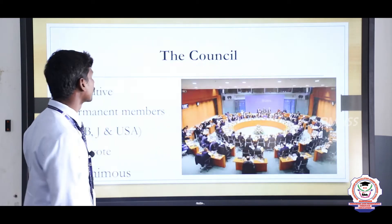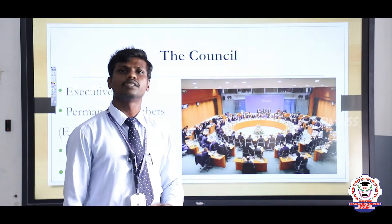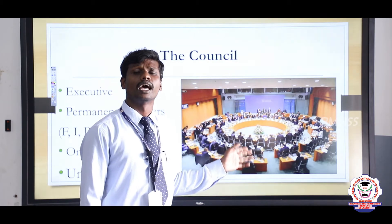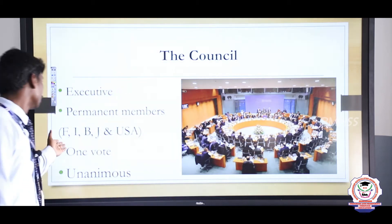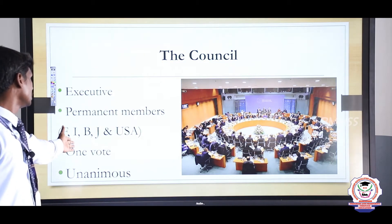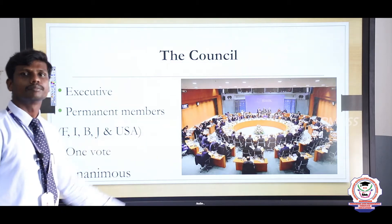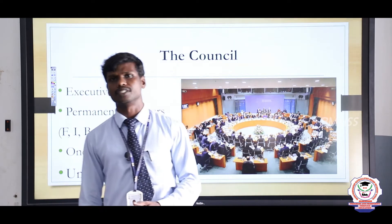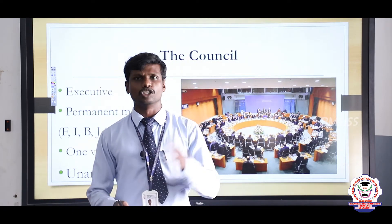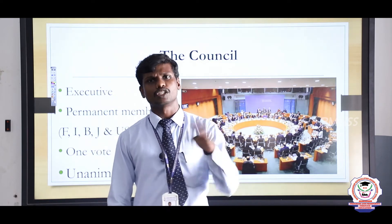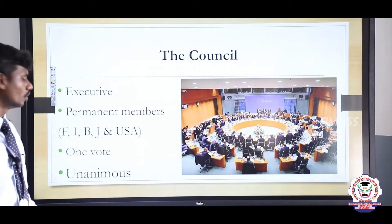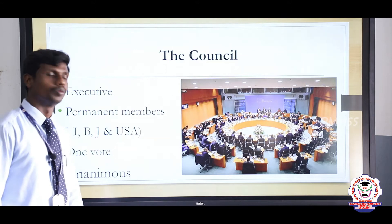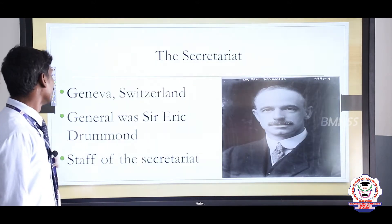After that, the Council. It is a permanent body, having a number of persons. The victorious nations — known as France, Italy, Britain, Japan, and USA — were called the permanent members of the League of Nations. Later, in 1933, Germany joined, and after that Russia also joined and became members. But after that they started to quit from the League of Nations.